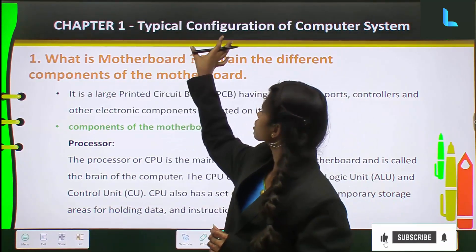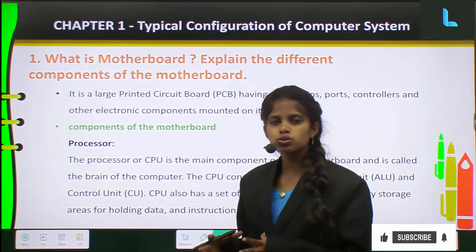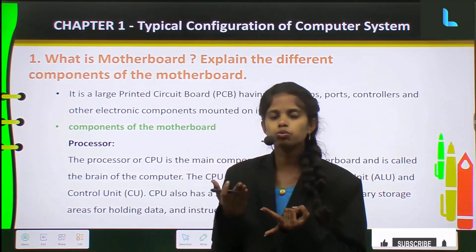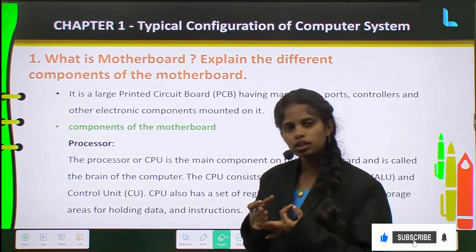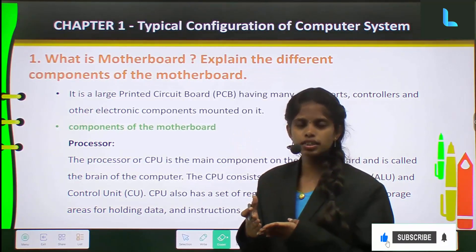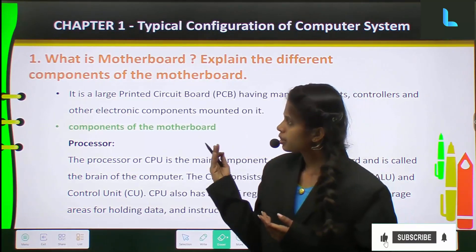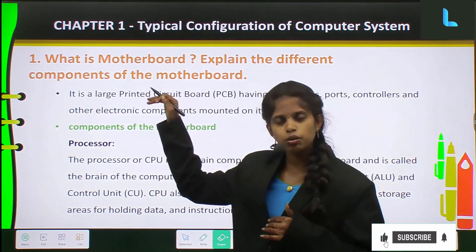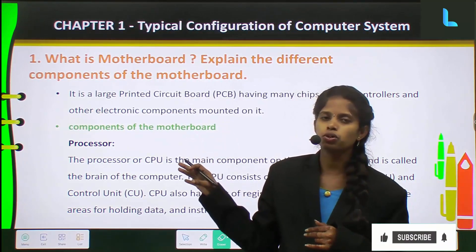In chapter 1, typical configuration of the computer system, the topics we covered are: a block diagram of the computer, input/output devices, how communication happens, what is meant by motherboard, what is primary memory, RAM, and the power supply. The very important topics are motherboard and memory — these are the topics you should concentrate on more.